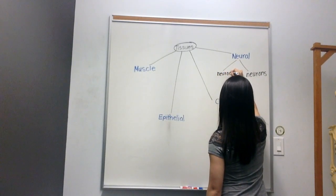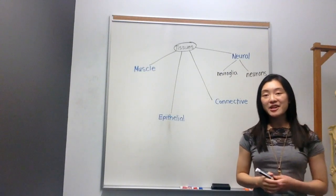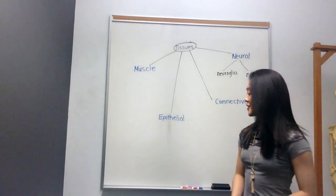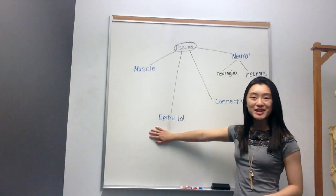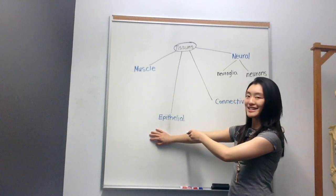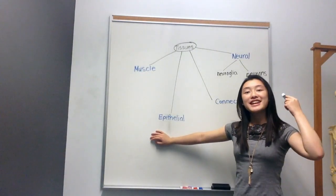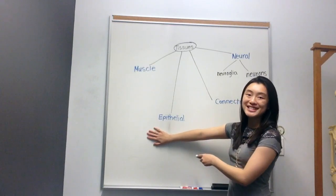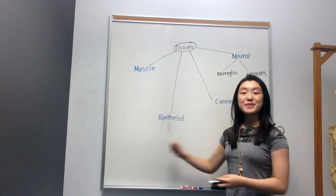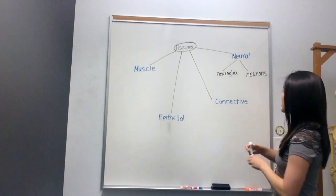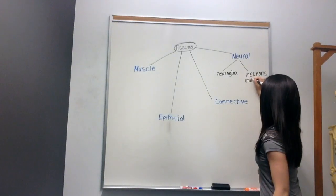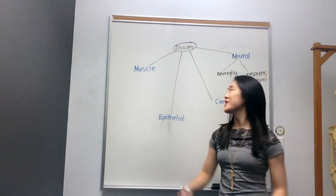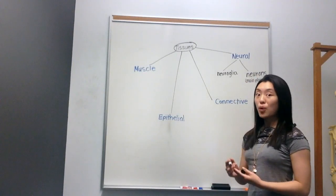There are two types of neural tissue: neurons and neuroglia. The role of neurons is to carry important information up to your brain and from your brain back to your body. For example, if you were to touch something extremely hot, the neurons would carry that 'it's hot' information to your brain, which would send the signal to flinch and remove your hand.